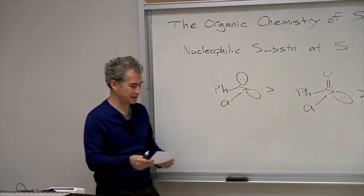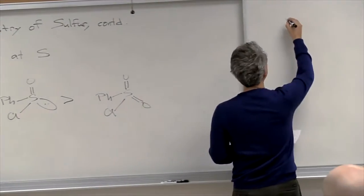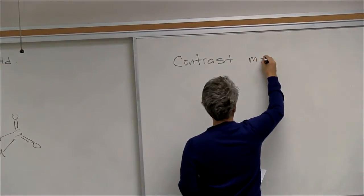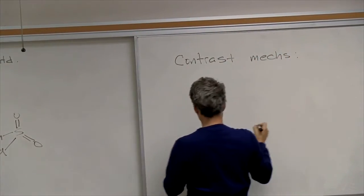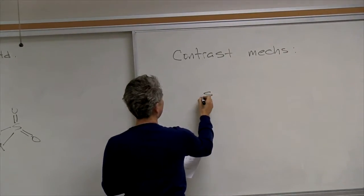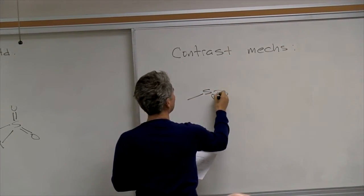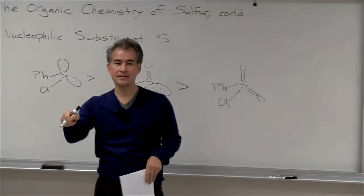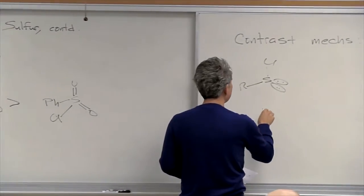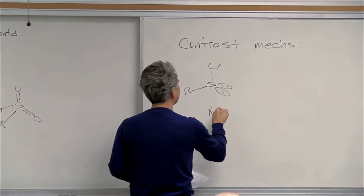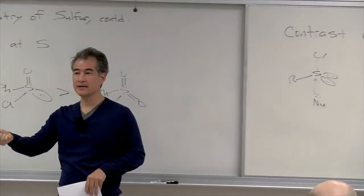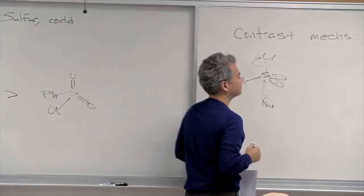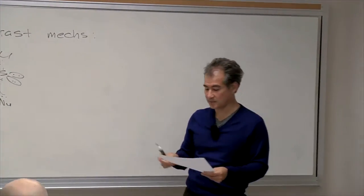So let's talk about the mechanisms for substitution. If you look at the substitution of a sulfenyl chloride by some kind of a nucleophile, this is an SN2 reaction — it's one of the few good SN2 reactions in organic chemistry. So as the nucleophile is coming in, the leaving group is leaving. This is a concerted displacement, and so the chloride will leave as the nucleophile comes in.